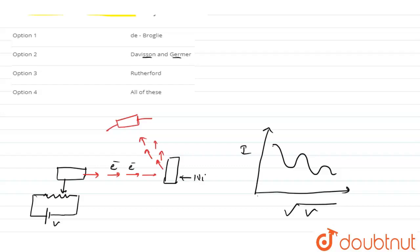The electron beam is diffracted by this nickel plate, and the movable detector detects this diffraction pattern — the diffracted beam. We get the pattern of intensity versus accelerated voltage, and from this there is proof that electron is a wave. This is called the Davisson and Germer experiment.